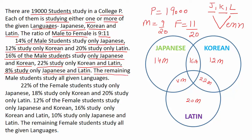The remaining male students study all the given languages. First we need to find the remaining male students. So: 14+16=30, 30+12=42, 42+22=64, 64+20=84, 84+8=92. So 100 minus 92 is 8%. We write 8M in all the given languages.